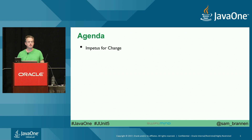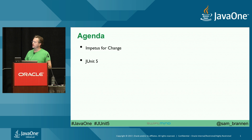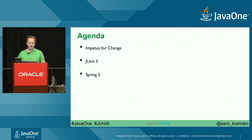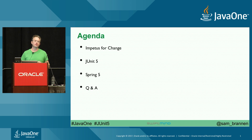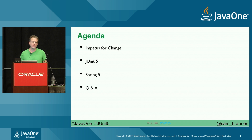So the agenda: first, talk about impetus for change — why we did it. Then I'll talk about JUnit 5 in detail, a little bit about Spring 5, and then time-permitting Q&A. If you're unhappy with the 45-minute format, feel free to complain. It would be nice if we had an hour. We have a BOF tonight on JUnit 5, so if there are more questions, please come to the BOF as well.